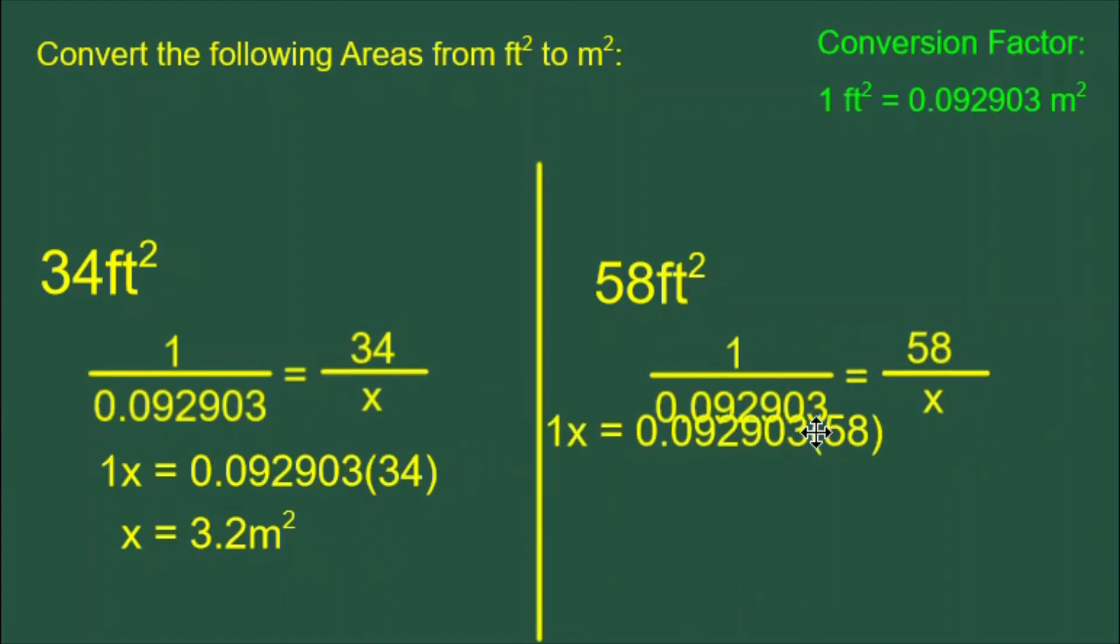We cross-multiply, and we get 1x equals 0.092903 times 58. 1x is equal to x, and 0.092903 times 58 is equal to 5.4 meters squared.